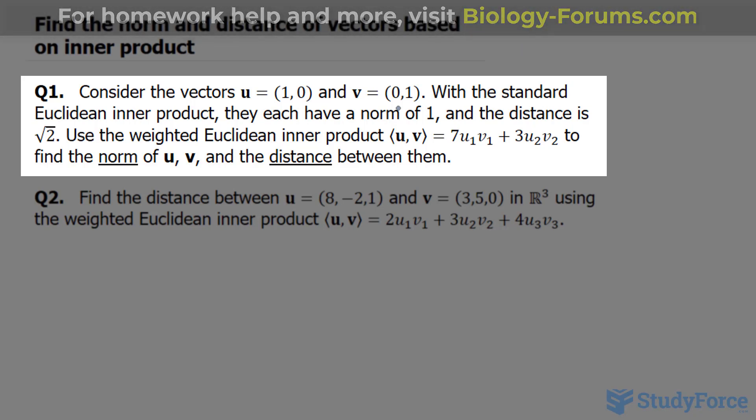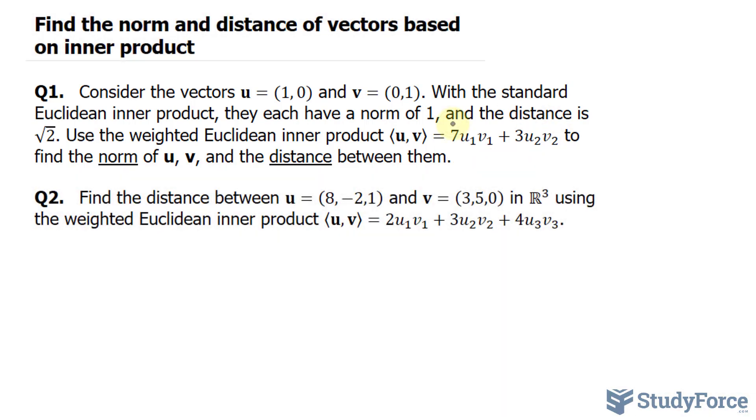In case you're curious what norm is, it is the geometric length of a vector, or the magnitude of a vector, and it's noted with double absolute bars. We're expected to use the weighted Euclidean inner product of u and v, being this expression here, to find the norm of u and v and the distance between them.